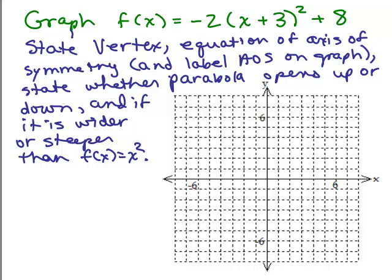All right, here's one for you to do. Graph f(x) = -2(x + 3)² + 8, as accurate as possible on a piece of graph paper. And then state and label the vertex, the equation, write the equation of the axis of symmetry and label that on the graph. State whether the parabola opens up or down, and whether it's wider or steeper than f(x) = x². So go ahead and put the video on pause and try that.